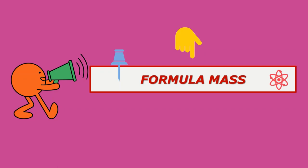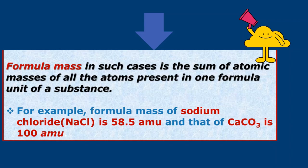Formula mass is the sum of atomic masses of all the atoms present in one formula unit of a substance. For example, formula mass of sodium chloride NaCl is 58.5 amu and that of CaCO3 is 100 amu.